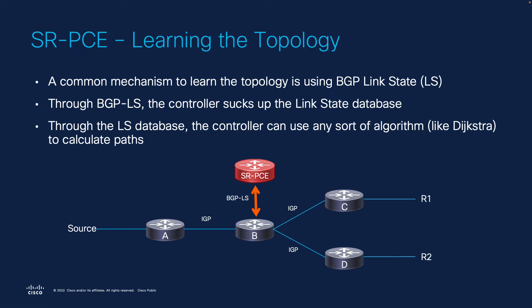Let's now see an example to understand how SRPCE acts and works. First, SRPCE needs to learn the topology. A common mechanism is BGP link state. The network is connected to the SRPCE by BGP link state, and through that the controller can get the link state database from it by using OSPF or IS-IS. The next step is to use any path computation algorithm, like Dijkstra, to calculate the paths. If a link fails, the controller has to know to recalculate.